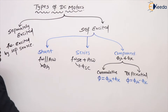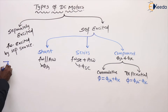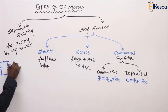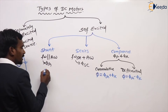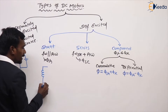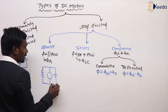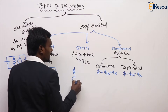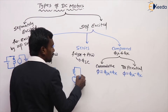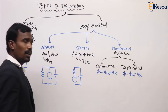So, DC motors are two types: separately excited and self-excited. Separately excited means the field winding is excited separately while the armature winding is given by the supply source. Shunt means the armature windings are connected in parallel. Series means the field winding and the armature windings are connected in series.